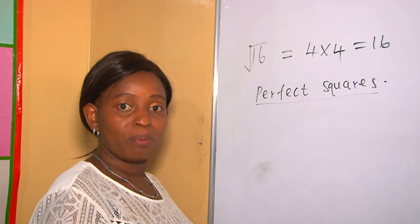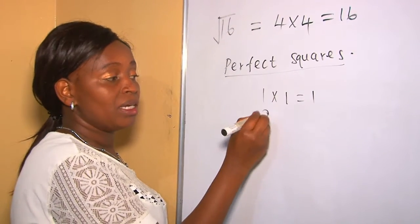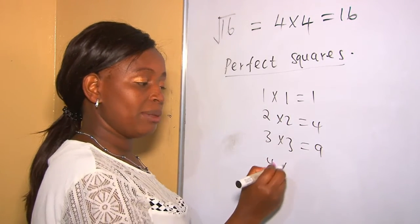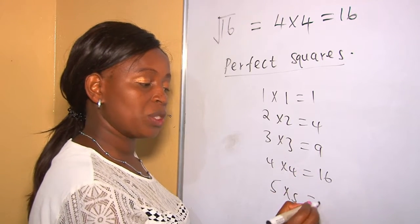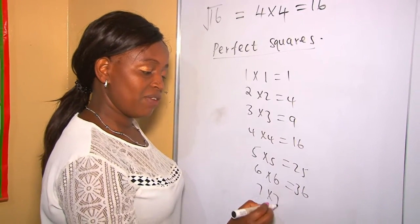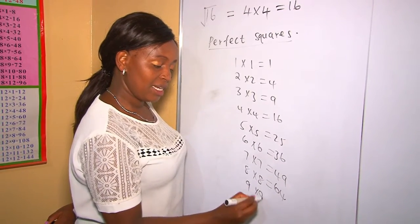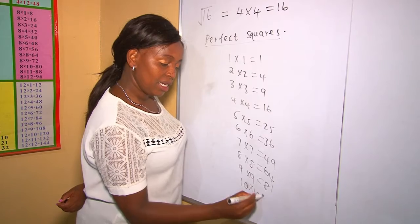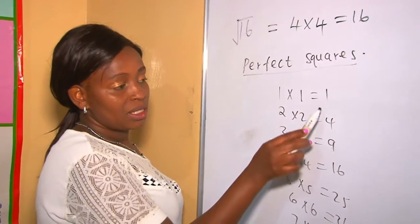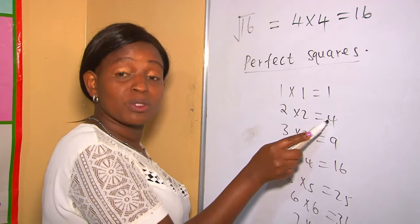From the concept of perfect squares: 1 times 1 is 1, 2 times 2 is 4, 3 times 3 is 9, 4 times 4 is 16, 5 times 5 is 25, 6 times 6 is 36, 7 times 7 is 49, 8 times 8 is 64, 9 times 9 is 81, 10 times 10 is 100, and so forth. Therefore, the square root of a number is a value that when multiplied by itself gives you that same number.